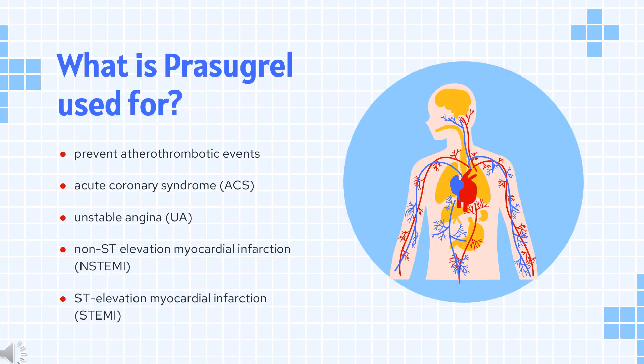Prasugrel is indicated in combination with acetylsalicylic acid (ASA) to prevent atherothrombotic events in patients with acute coronary syndrome (ACS) who are to be managed with percutaneous coronary intervention (PCI). It may be used in patients with unstable angina (UA), non-ST elevation myocardial infarction (NSTEMI), or ST elevation myocardial infarction (STEMI) who are to be managed with PCI.